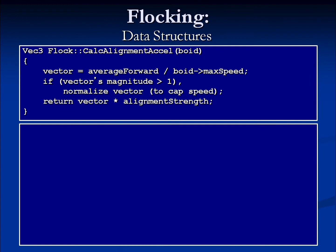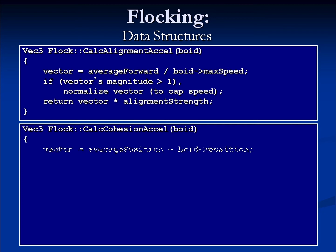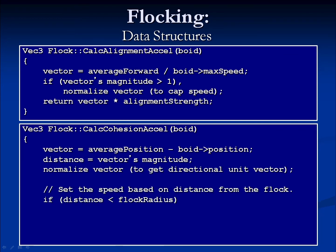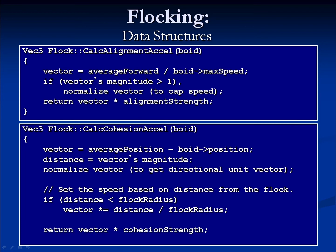The calculation of the alignment acceleration is fairly straightforward: we take the average forward vector and divide it by the max speed of that boid. If the magnitude of that vector is greater than one, we normalize it to cap the speed, then scale it by its strength and return that value. The cohesion acceleration calculation is slightly more involved. First we calculate a vector pointing toward the average position from the boid's position, extract the distance, and normalize to get a unit vector. If the distance is less than the flock's radius, we scale that unit vector by the distance divided by the radius. In either case, we scale by the strength value and return the vector.